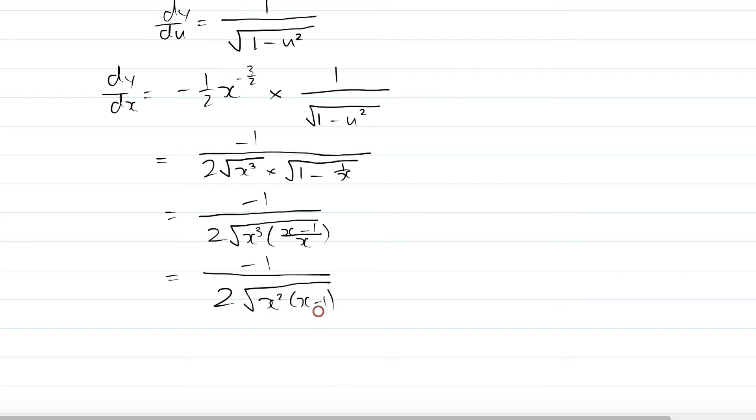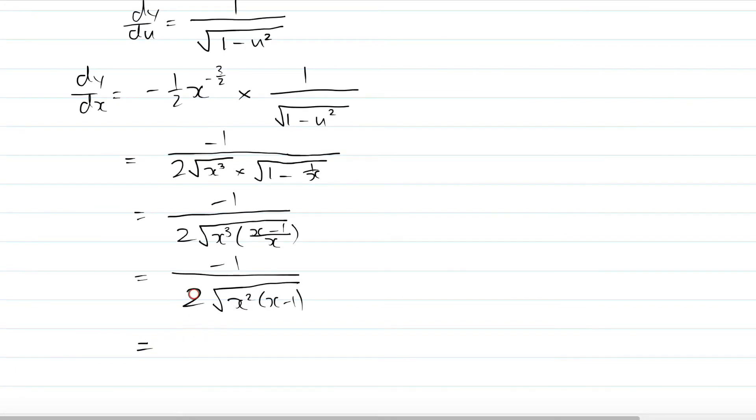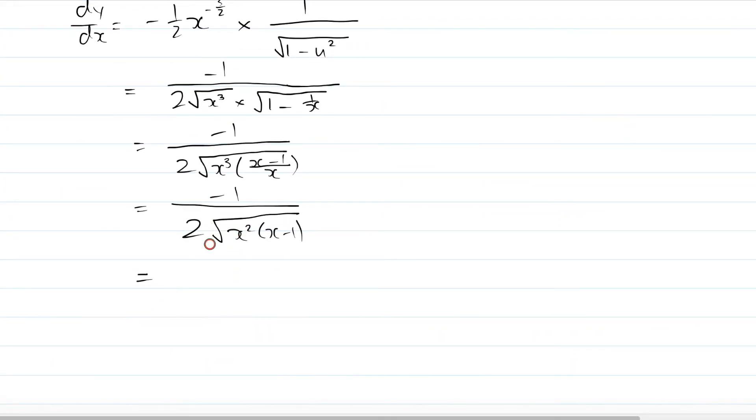And you end up with x minus 1. Afterwards, we can see that there's an x square, there's a square root. You can take the x out and you're left with x minus 1. And that's dy/dx, your first derivative.